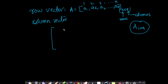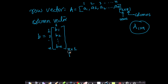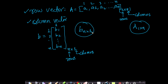For a column vector, suppose I have a vector b with components b1, b2, ..., bn written vertically. It has n rows but only one column. I represent this as n×1, where n is the number of rows and 1 is the number of columns. So if someone writes b as n×1, I immediately understand it is a column vector.